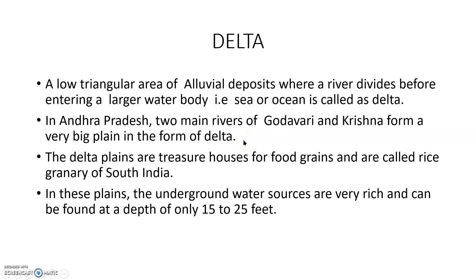Before entering into the Bay of Bengal, the Godavari and Krishna rivers form fertile deltas. The delta plains are treasure houses for food grains and are called the rice granary of South India. These areas are very fertile and very good for cultivation of grains.